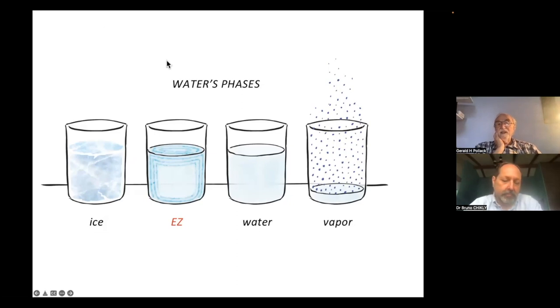The essence of what we found is that there's something that's different from what we learned. We learned that there are three phases of water, ice, liquid water, and vapor. But we found the fourth phase.